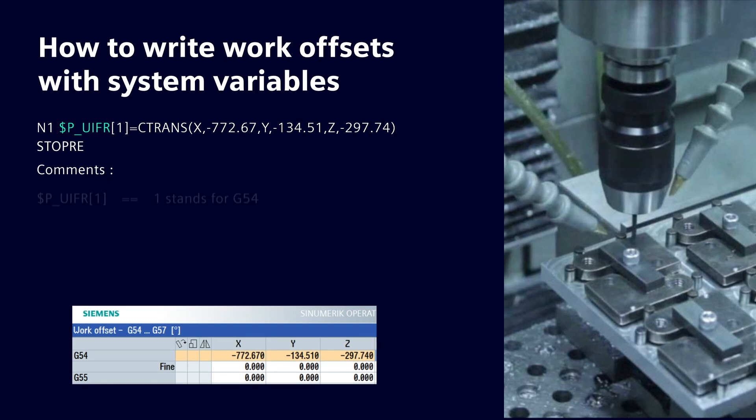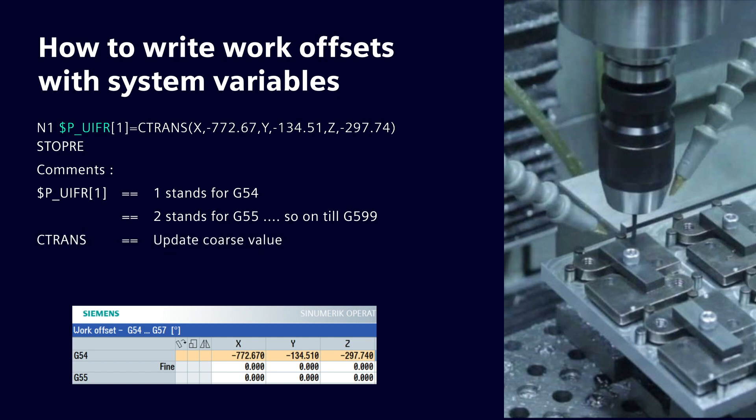One must remember: 1 stands for G54, 2 for G55, and this continues till G599. C trans is used to update the course value of a work offset.